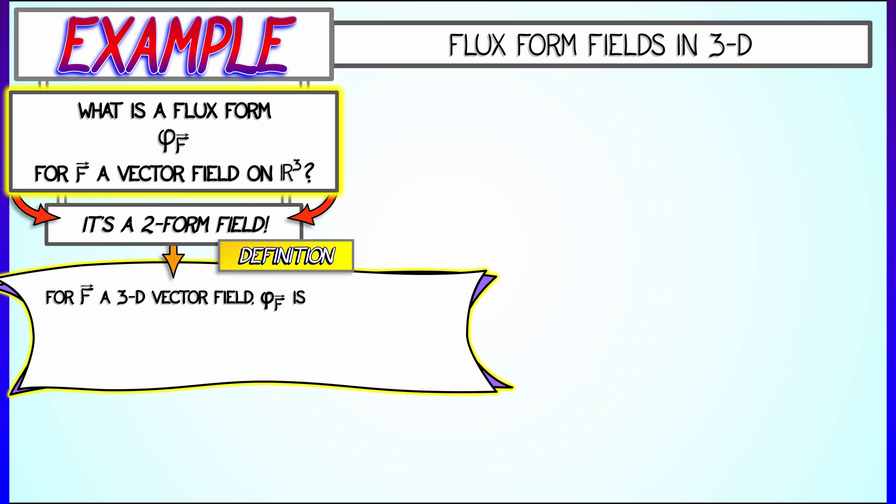Given F, a vector field in 3D, phi sub F, the flux two-form, is defined at a point as follows. Given a vector u and v, the evaluation of that flux form on those two vectors is what you get when you take a matrix, pop u and v into the columns, and then F. Take the determinant of that 3x3 matrix, and that's it. That is the value of the flux two-form there.